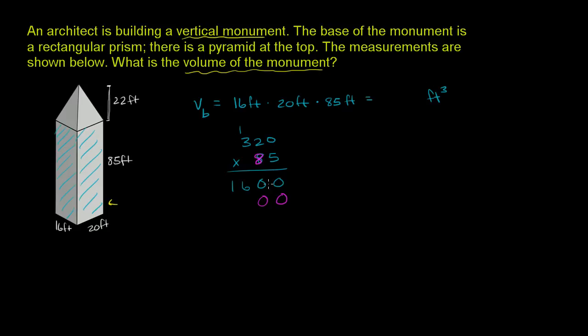So 8 times 0 is 0. 8 times 2 is 16. 8 times 3 is 24, plus 1 is 25.